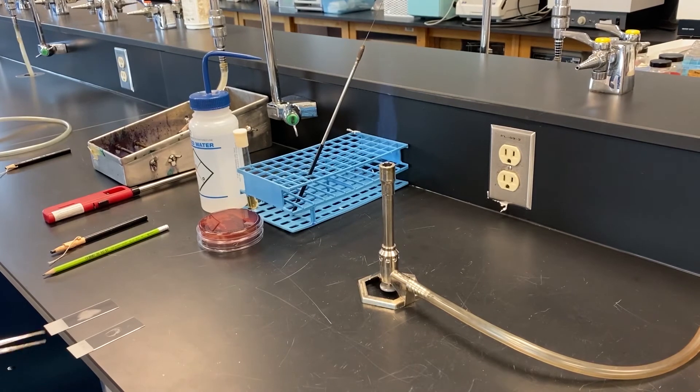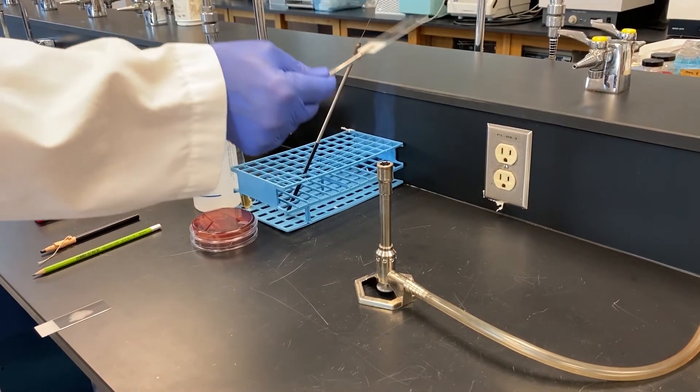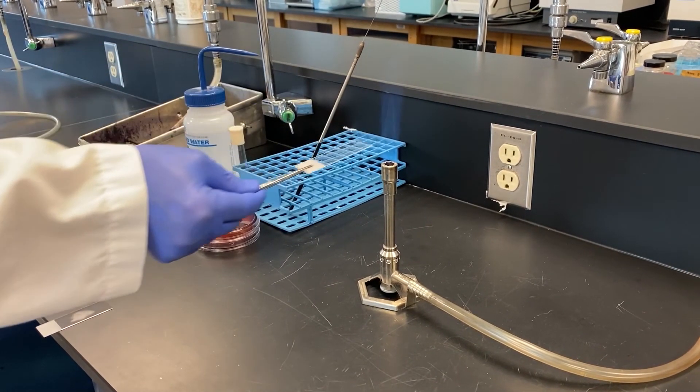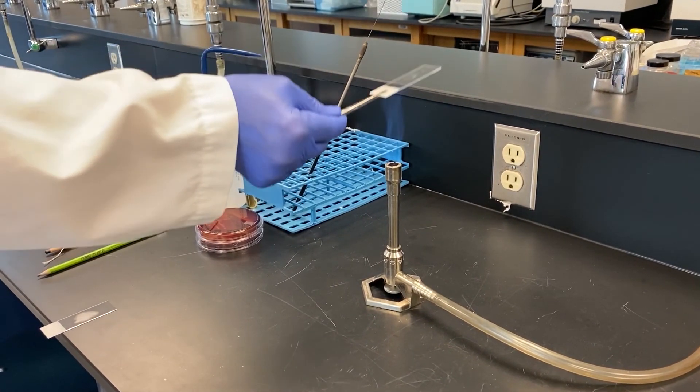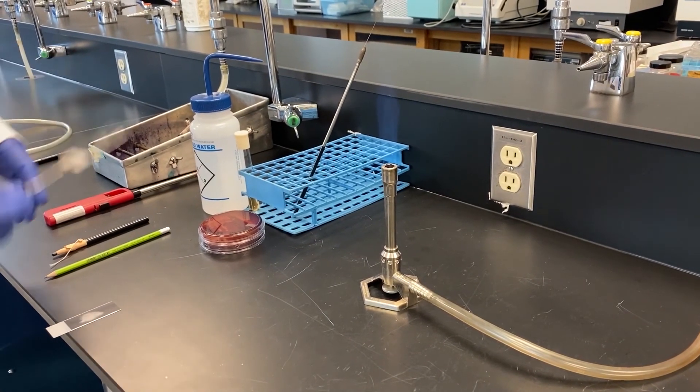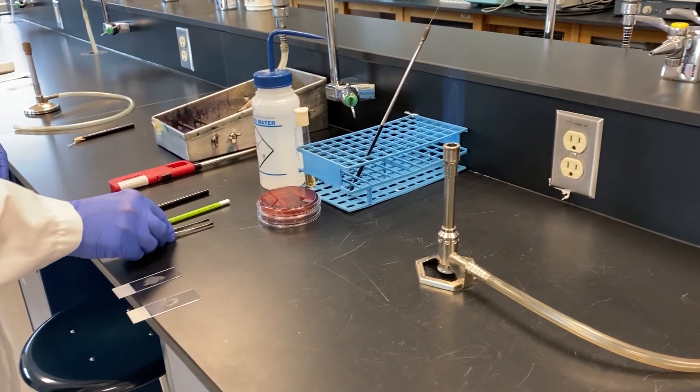The heat fixing process is very simple. Hold your slide with a pair of forceps and gently pass it through the flame three times. Do not hold it in the flame as this will cook the bacteria and we won't be able to see them under the microscope. You can carefully do a check using your hand to make sure the slide does not get too hot. Now your slides are ready for staining.